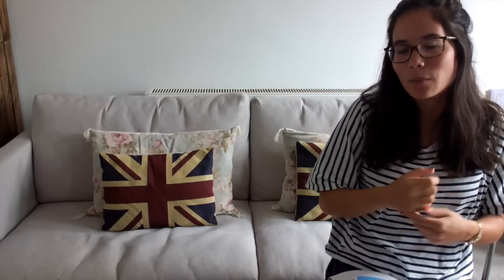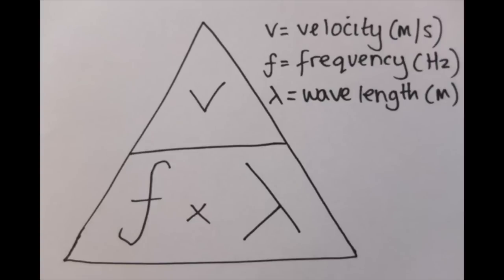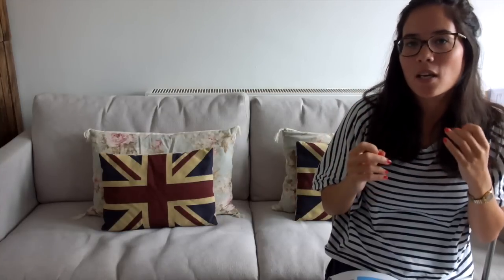The wave equation is something you need to get to grips with. Using your formula triangle — that's always the best way. At the top of the triangle you have V, which stands for velocity, the speed of the wave. At the bottom of the triangle you have frequency, which is measured in hertz, multiplied by the wavelength, given by the Greek symbol lambda. Try not to worry too much about that — if you get it, great; otherwise just write wavelength, and remember that's measured in metres. So wave speed equals frequency times wavelength, and you can calculate your wave speed in metres per second.